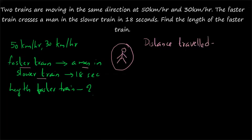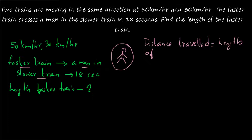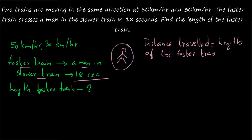Even though both trains are moving, you should not add the lengths of both trains for the distance travelled. Here a reference is given — a man sitting in the slower train — so the distance travelled is equal to the length of the faster train. The distance travelled in 18 seconds is equal to the length of the faster train.